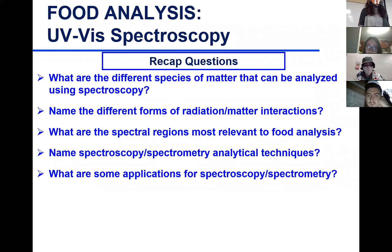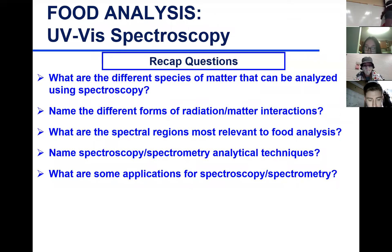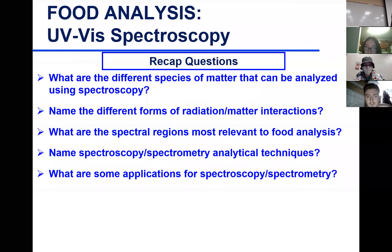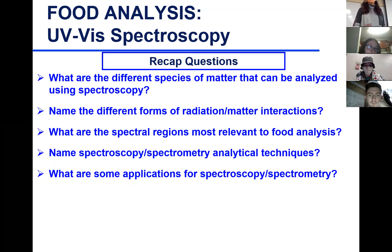What are the different species of matter that can be analyzed using spectroscopy? When you say species of matter, what do we mean? Very simple — we're either analyzing atoms and molecules. So either molecules or atoms. And today the focus is on atomic absorption spectroscopy or atomic emission spectroscopy, which is based on measuring atoms.